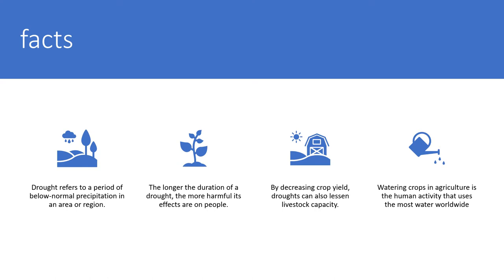Watering crops in agriculture is the human activity that uses the most water worldwide. Watering crops needs water — without it, they would not grow. So in a drought, many indoor plants will also die.